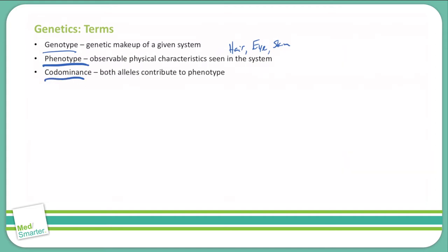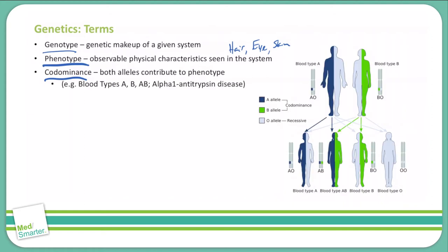Moving on — codominance. This is when both alleles of the genotype contribute to the phenotype. This is not often seen, but we do see it very commonly with blood types. You have the A blood type and the B blood type, but if they come together you can have AB, and if they are both absent, then you have O.